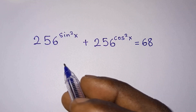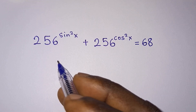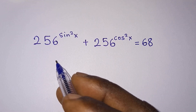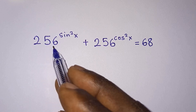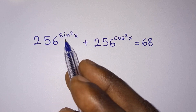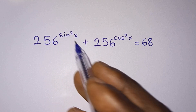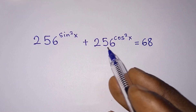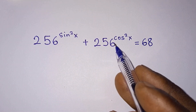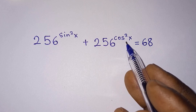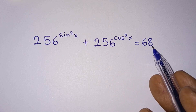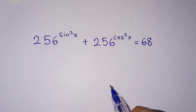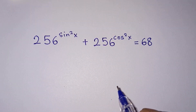Hello everyone. In this video we have this interesting exponential equation: 256 to the power sine squared x plus 256 to the power cosine squared x is equal to 68, and we are to find the value of x.